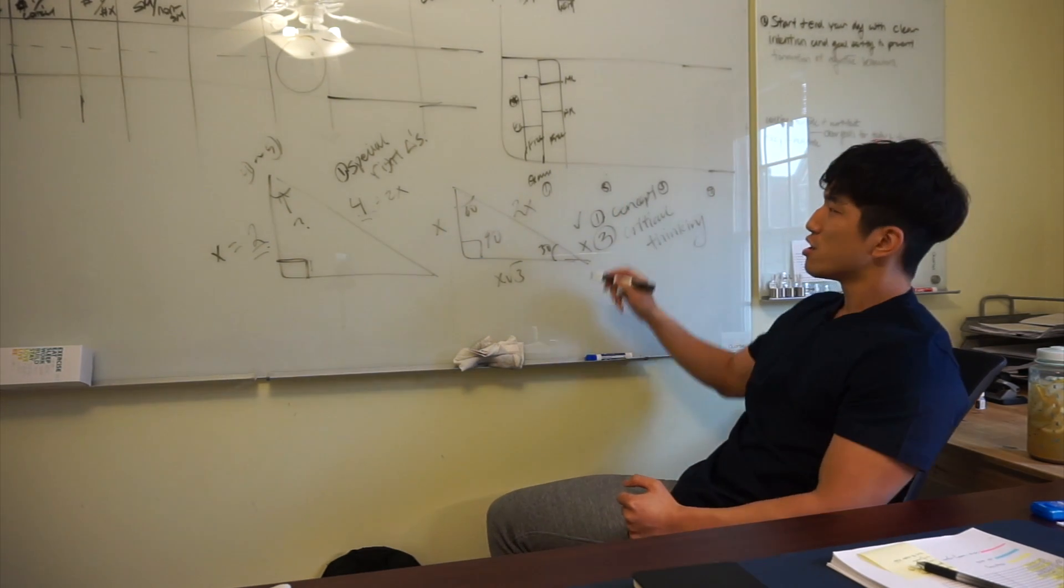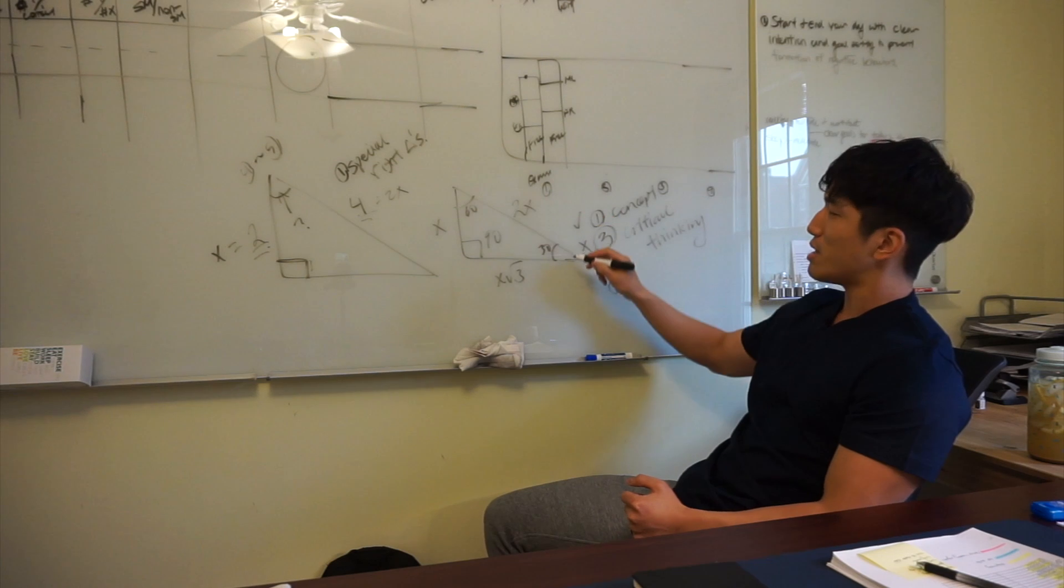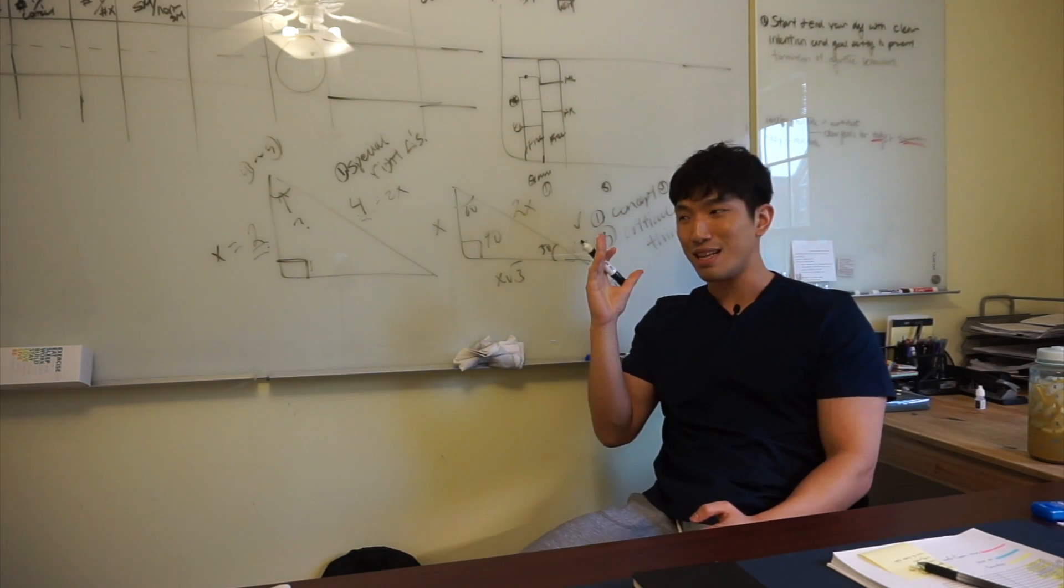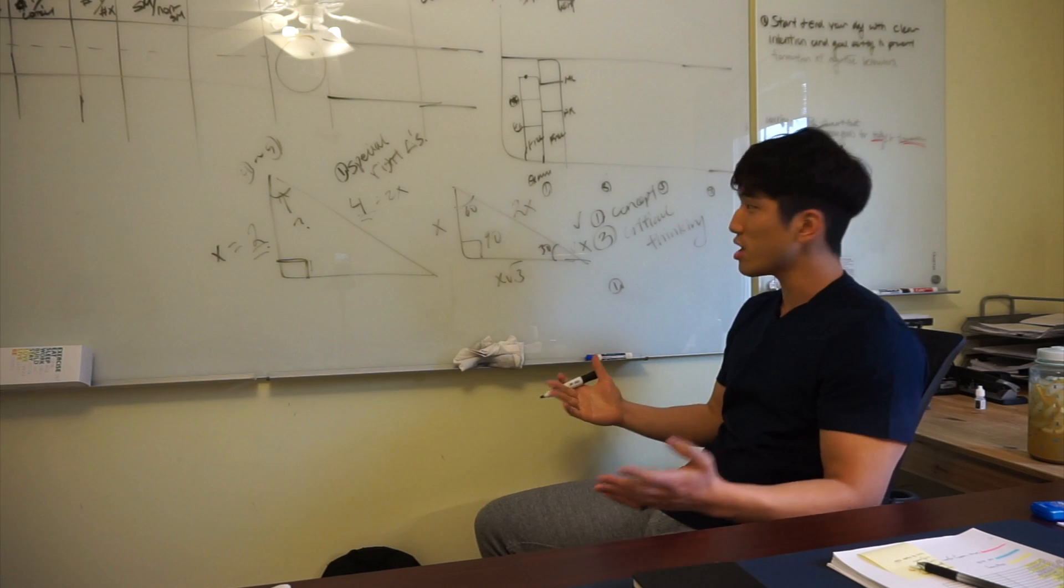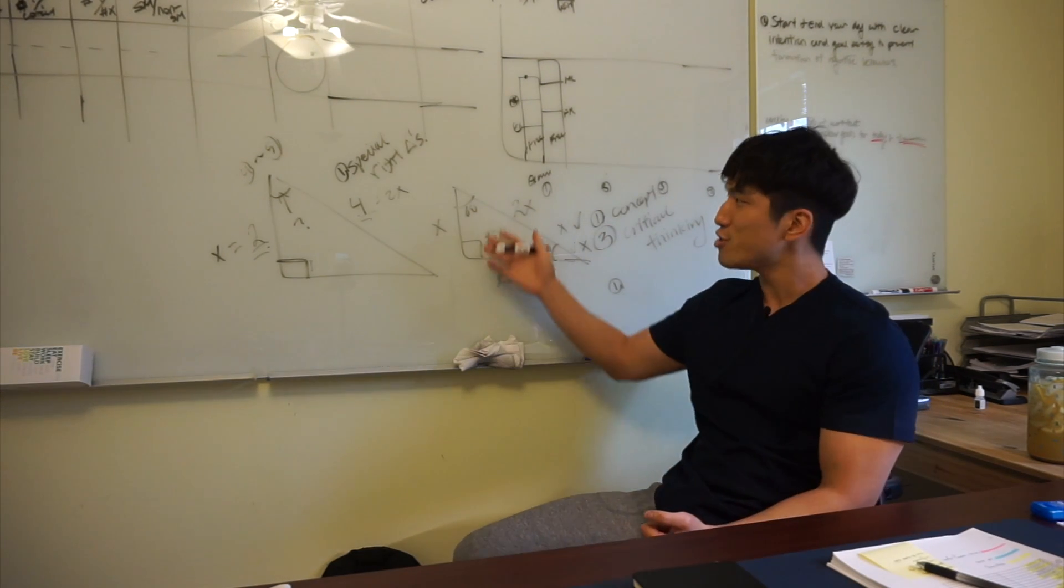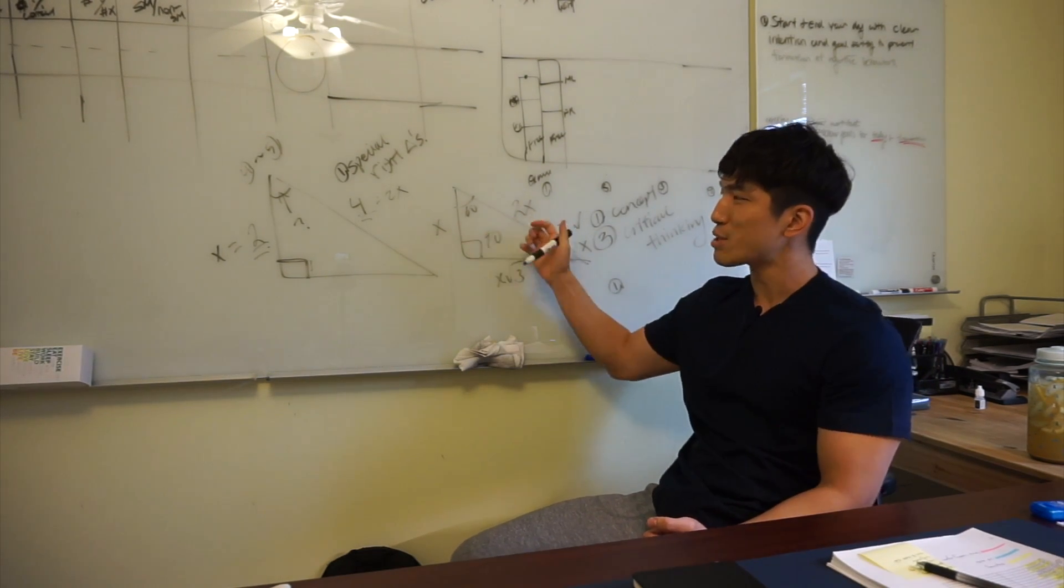The second type of student is someone who's very good with critical thinking, their brain's spinning really quickly and they're just naturally smart, but they just don't have any concepts in their head. So, because you don't know what special right triangles are, when you see this, you don't even know where to start.